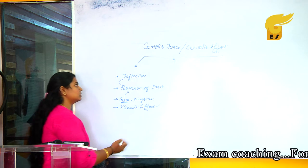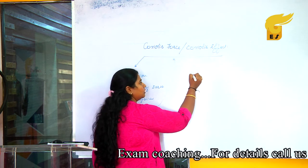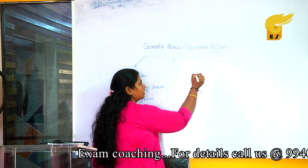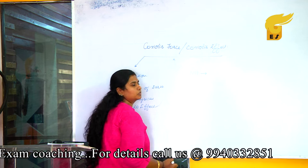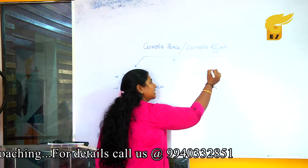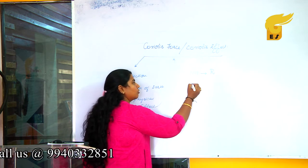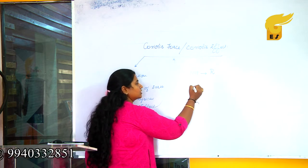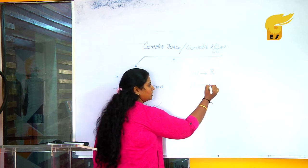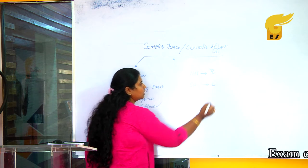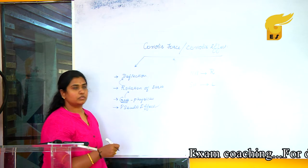According to the Coriolis effect, whatever object is thrown in the northern hemisphere will get deflected to the right hand side, and whatever objects are thrown in the southern hemisphere will get deflected to the left hand side.